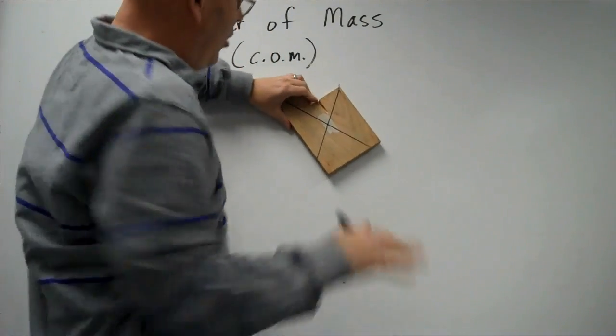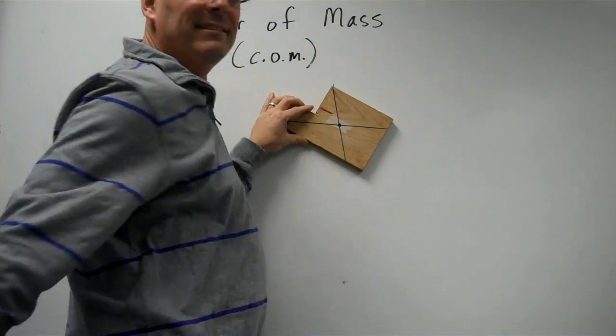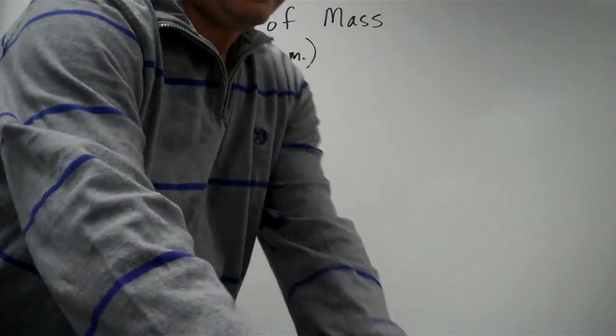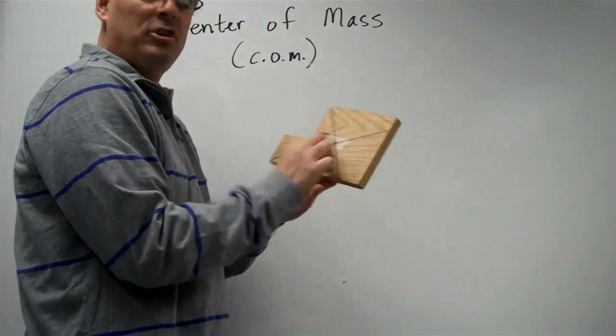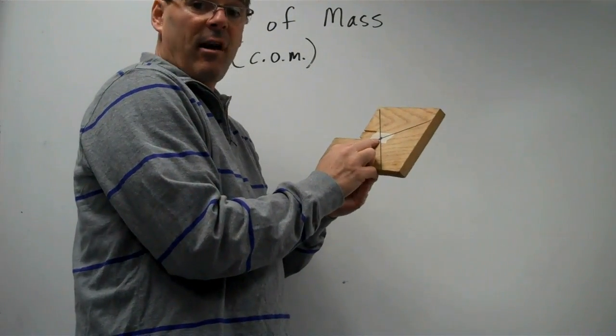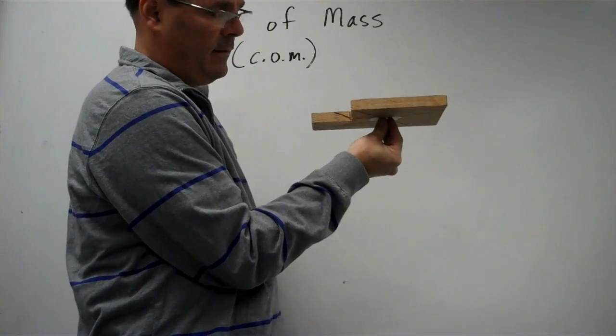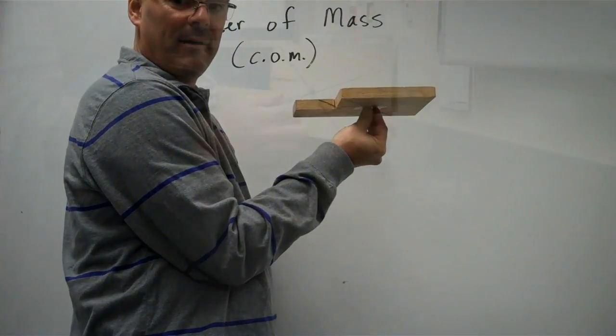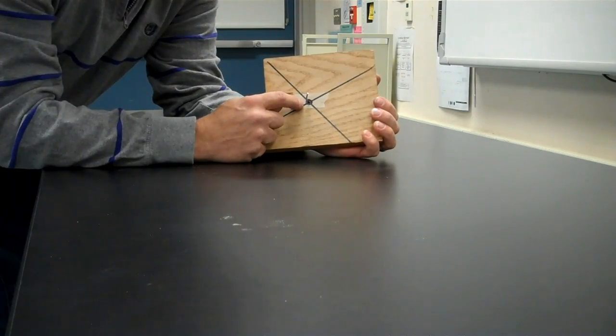Now I know where the lines intersect. That's going to be my center of gravity. And to check that out, I should be able to balance the object at the center of gravity. And in fact, that is where it is. The object should spin well about the center of gravity.